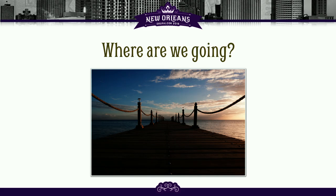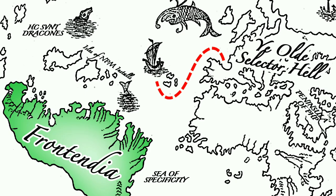Where are we going? Front-end development has been really crazy with all the different things that can happen. There's so many different things: you have NPM, you have Gulp, you have Grunt, you have performance regression testing, you have performance budgets, all these different things. It's really hard to figure out where you're going. That's what I wanted to talk about today — give you strategies for figuring that out.